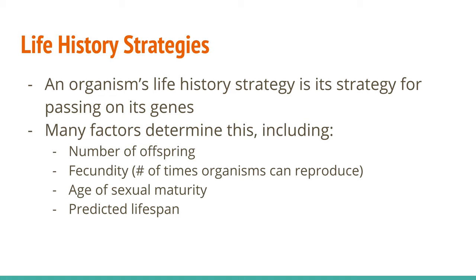As we talk about R-selected and K-selected strategies, remember that not every organism will have all the traits. A really good example is mice. Mice are an excellent example of an R-selected species — they're small, they have short lifespans, they hit sexual maturity really fast, and their gestation period is really short. Some mice are only pregnant for 14 days, and they produce fairly large litters. Those are all R-selected traits, but they reproduce sexually, which is a K-selected trait. So you will sometimes see mixing and matching.